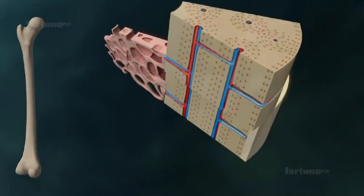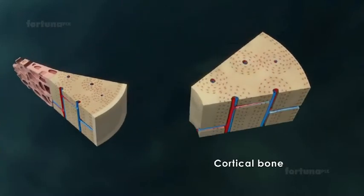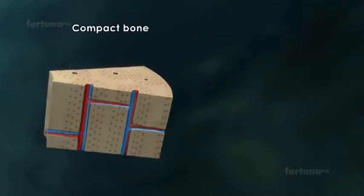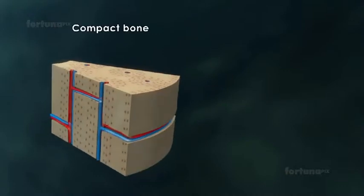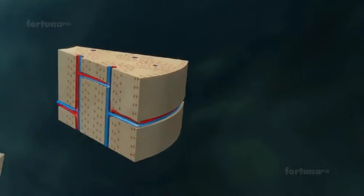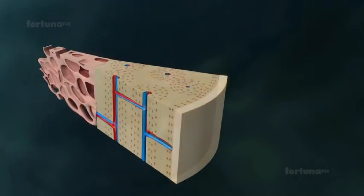Inside the periosteum is a thick layer of cortical bone, commonly referred to as compact bone. This outer shell of the bone is dense, strong, and resistant to bending. Because of these characteristics, it makes up about 80% of the skeleton.